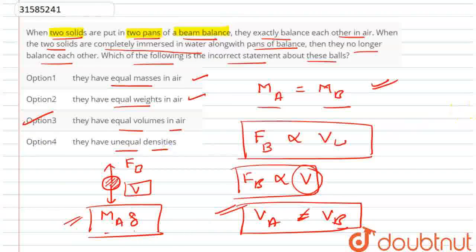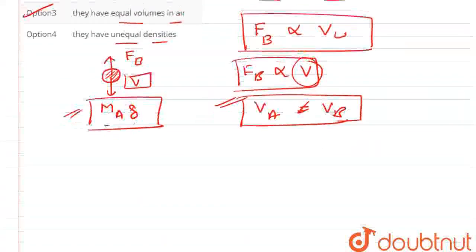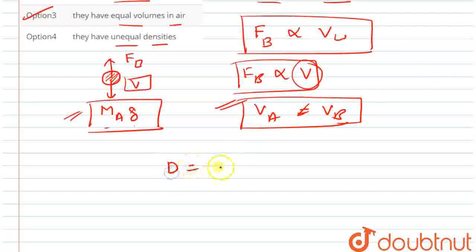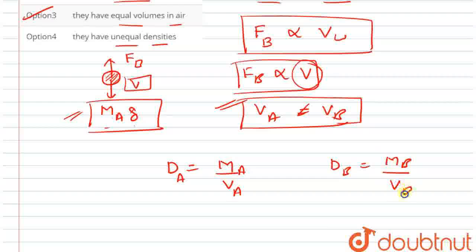They have unequal densities. Let's talk about densities. Density equals mass upon volume. Mass is the same. But if the volume is different, density of A equals mass of A upon volume of A. Density of B equals mass of B upon volume of B.